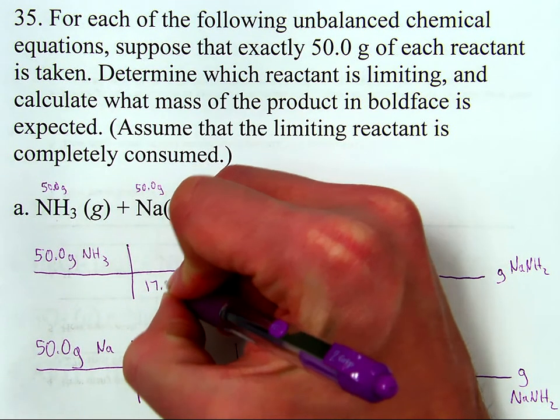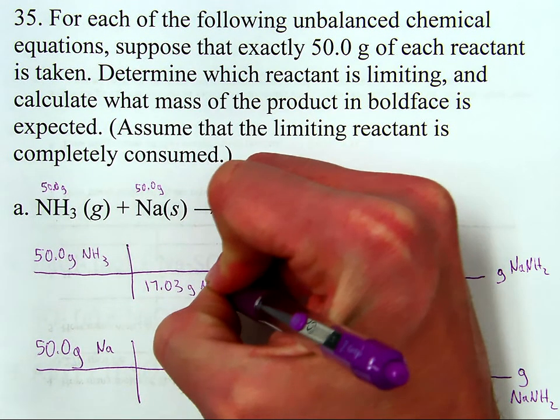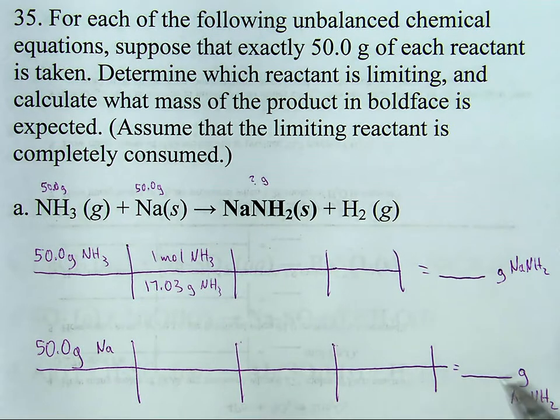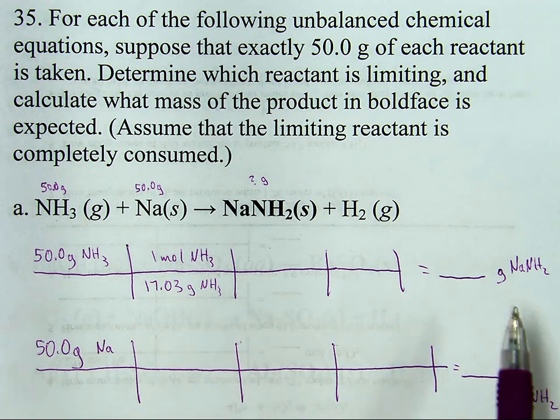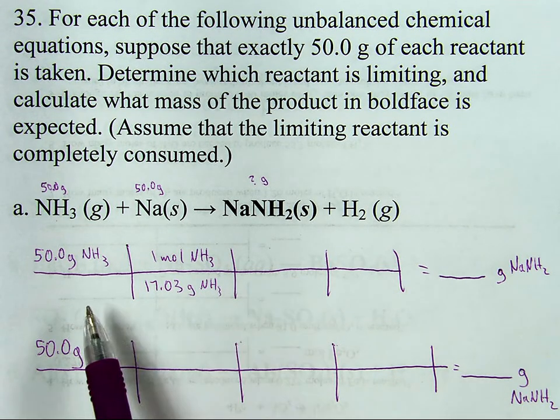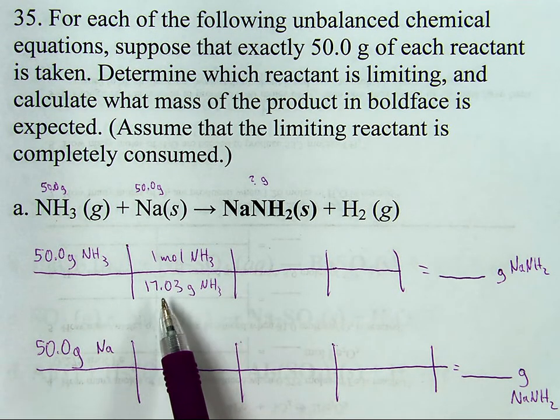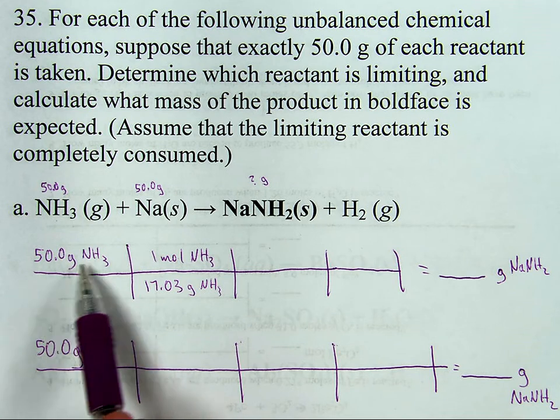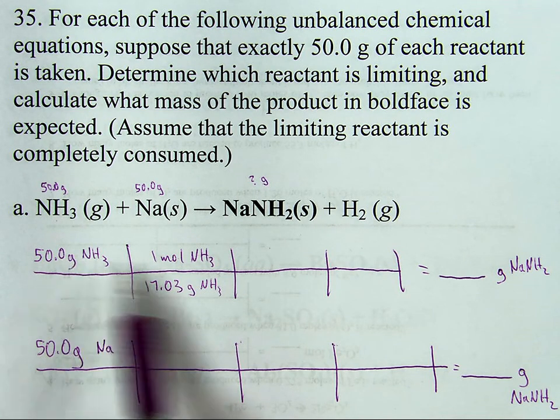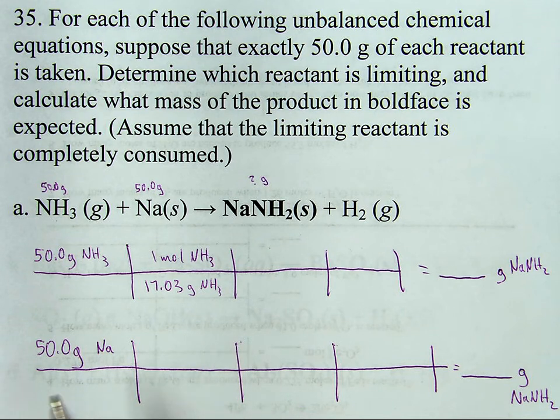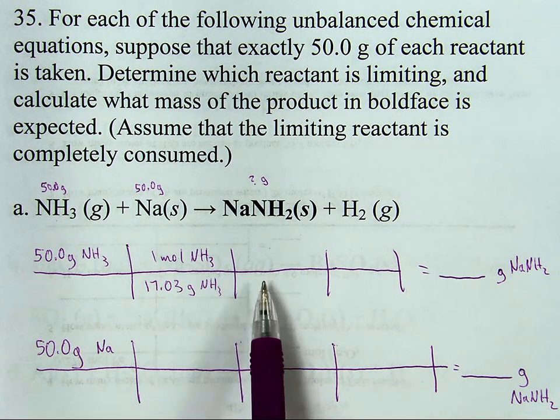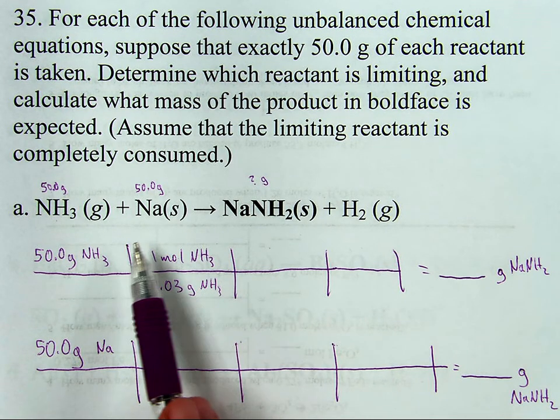So 17.03 grams of NH₃ for every one mole of NH₃. Written like this because grams of ammonia is not part of the final answer. I need to make sure it cancels out. How do I know to put the moles on top and the grams on bottom? Because I need grams of ammonia to cancel out with grams of ammonia. Think of this as like units. So now I have moles of ammonia.